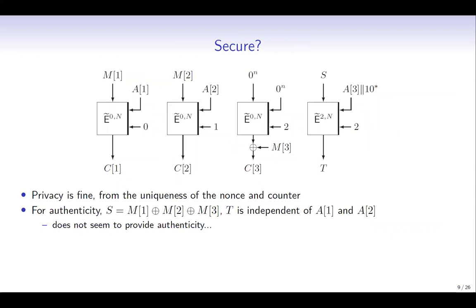We hope that IZO-CB is secure, and in fact the privacy is fine from the uniqueness of the nonce and counter. However, for authenticity, we see that S only depends on the plaintext, and the tag is independent of A1 and A2. So changing A1 and A2 doesn't contribute to the tag. At first glance, it doesn't seem to provide authenticity.